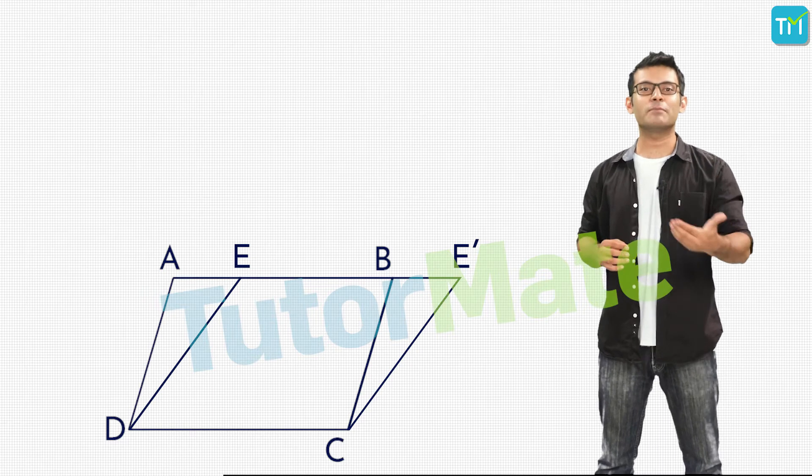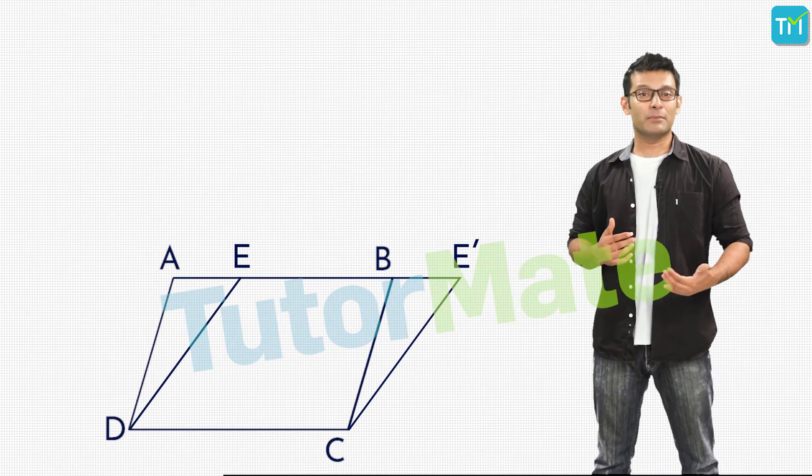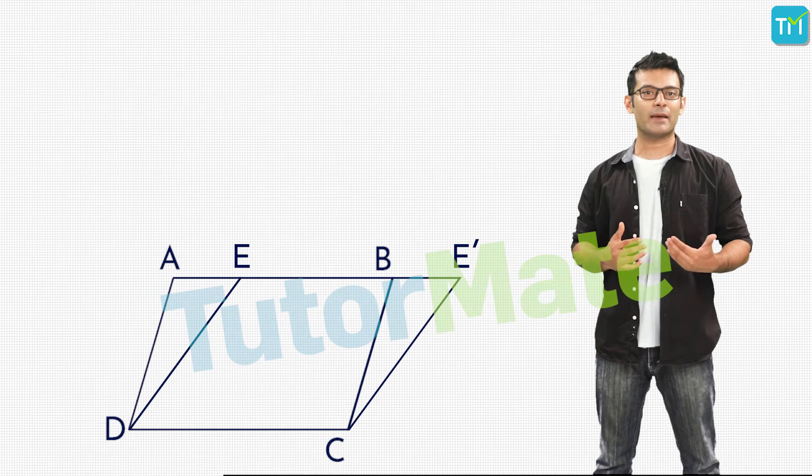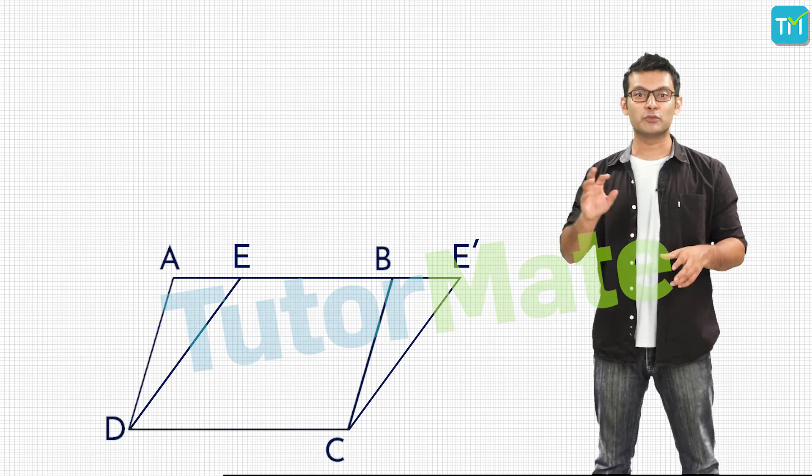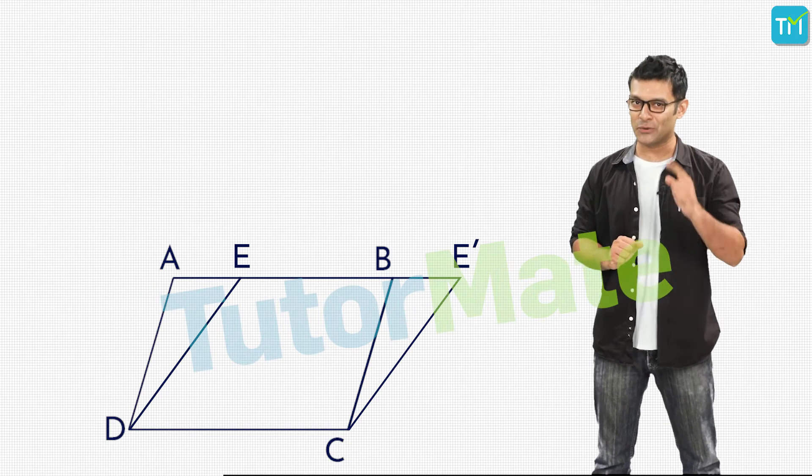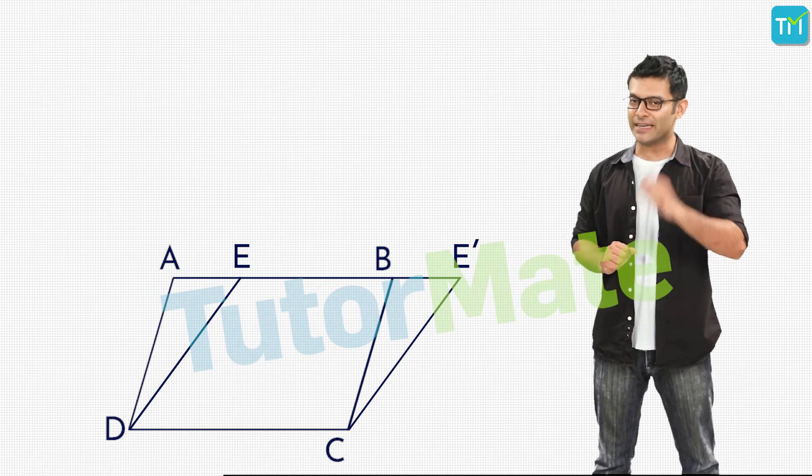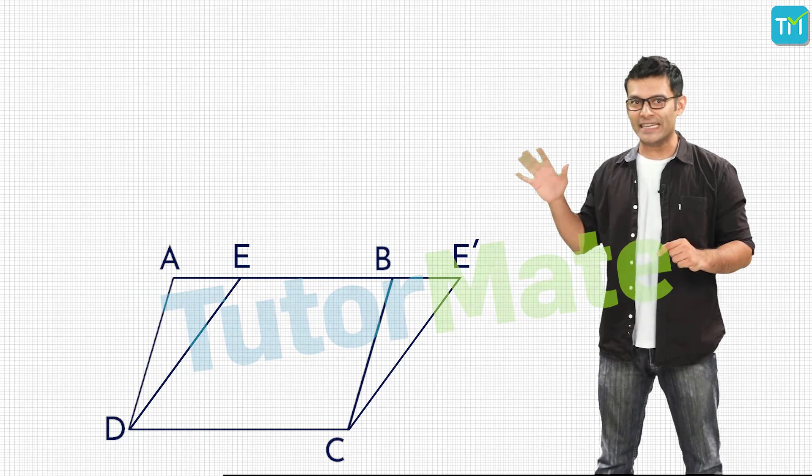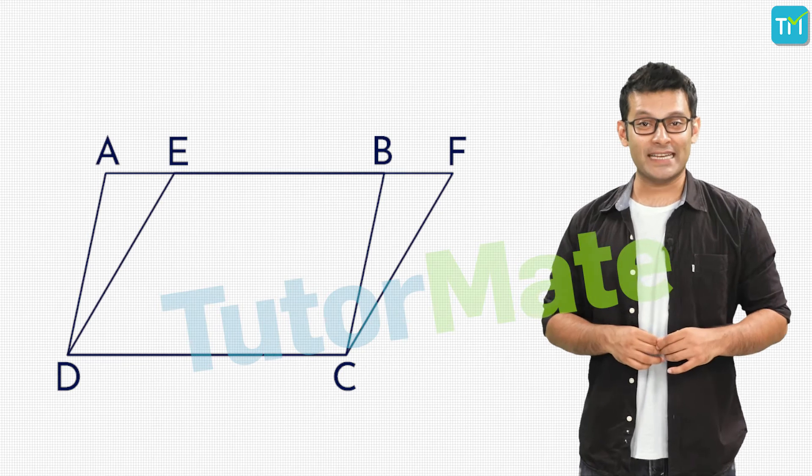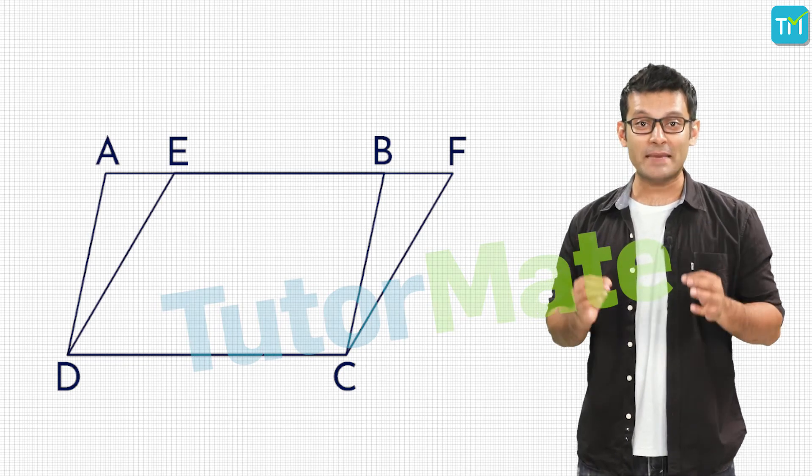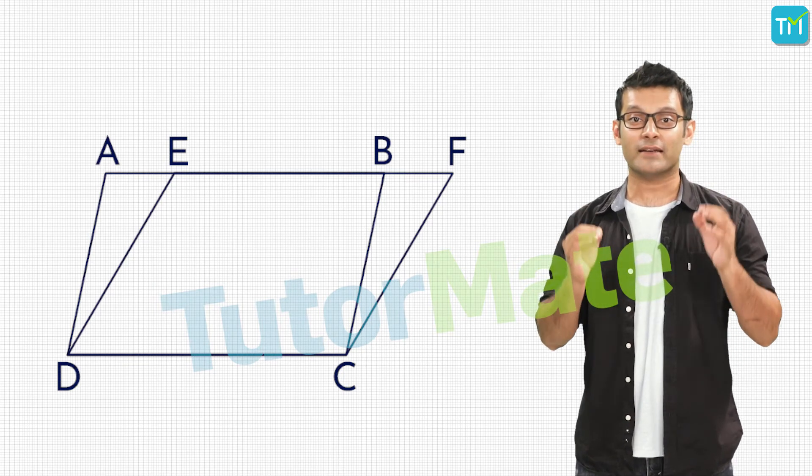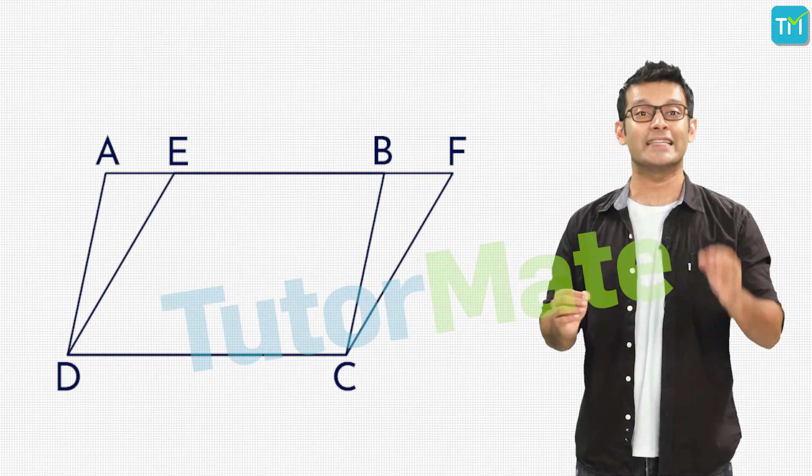Of course, we just proved it by playing around with the parallelogram. But we can't really cut a parallelogram and move the pieces here and there to prove theorems. So let's see how this can be proved theoretically. Before that we will state the theorem. Our theorem states that parallelograms on the same base and between the same parallel lines are always equal in area.